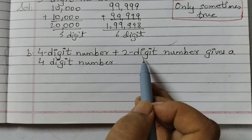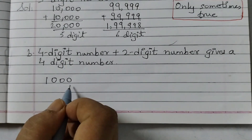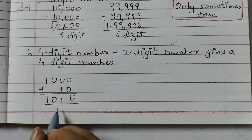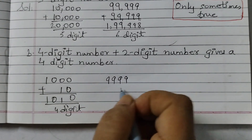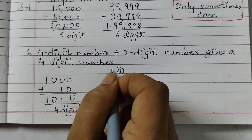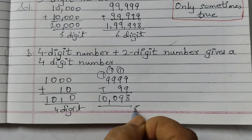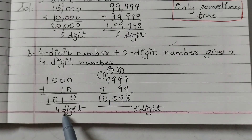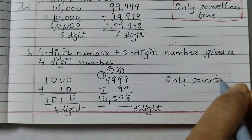Next: four digit number plus two digit number gives a four digit number. Take the smallest four digit number 1,000 plus smallest two digit number 10. We get 1,010 — a four-digit number. Now the largest: 9,999 plus 99. When we add them we get 10,098 — a five-digit number. So we're getting a four-digit number sometimes and a five-digit number sometimes. This is also only sometimes true.